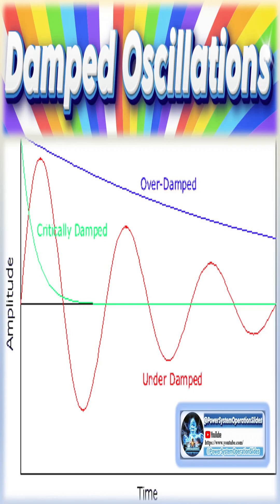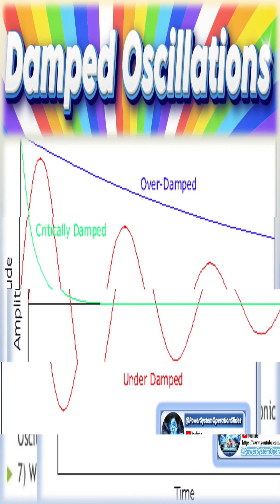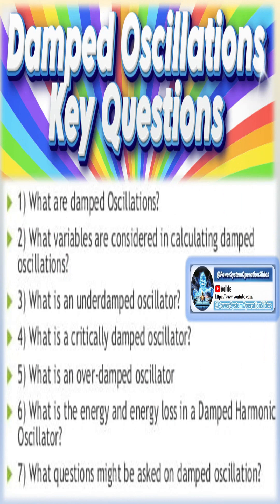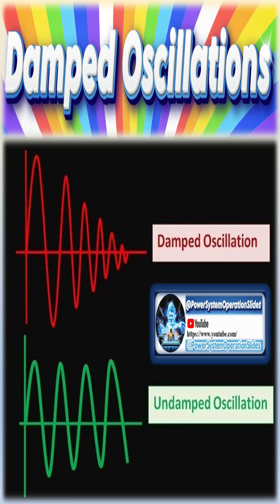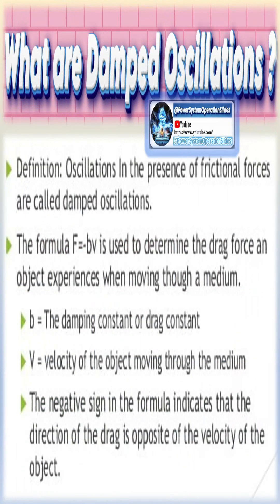Damped oscillations are electronic oscillations with diminishing amplitude over time due to inherent energy losses in the system. These oscillations gradually fade because the oscillator loses energy as heat or other forms. The amplitude decreases until the oscillator returns to equilibrium, but the frequency remains constant, dependent on the circuit parameters.